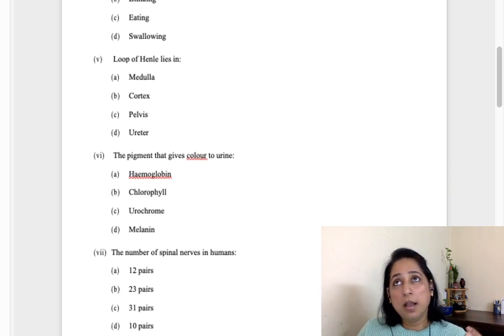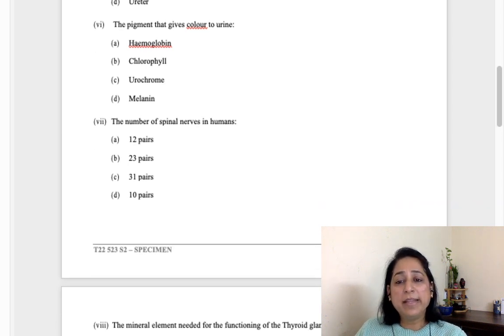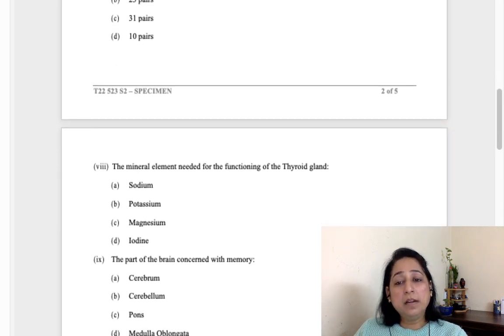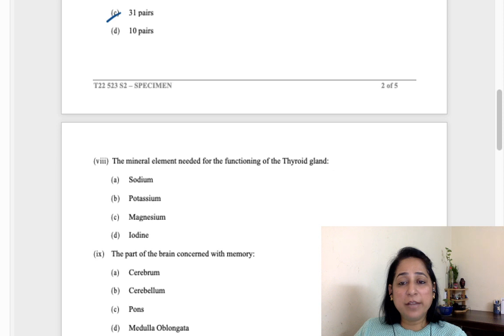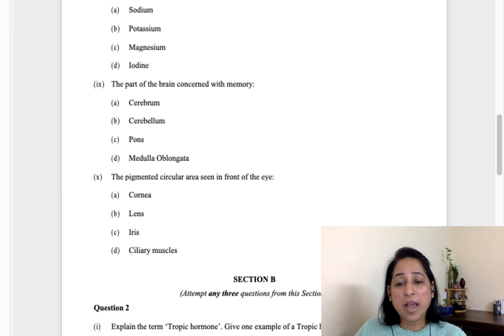Which one of the following is not a simple reflex? Simple reflexes are the ones which you can do without learning, so eating you have to learn. Loop of Henle lies in renal medulla - cortex is the outer part, inner is medulla. Pigment that gives color to the urine is urochrome. The number of spinal nerves in human is 31. If they would have asked cranial, it would have been 12.